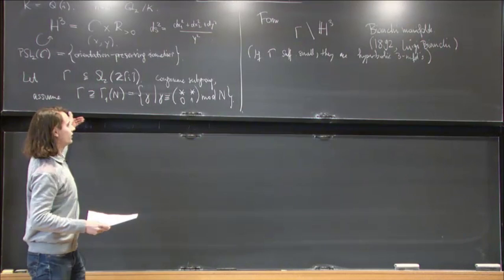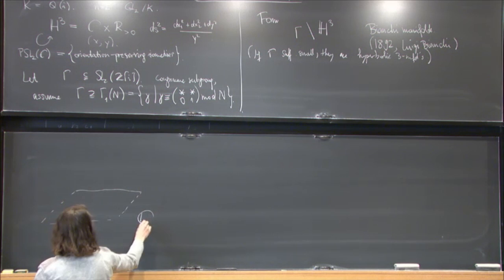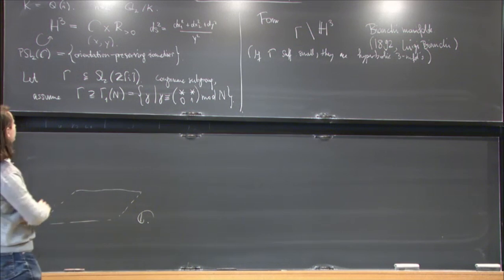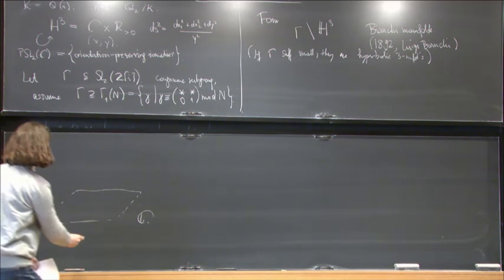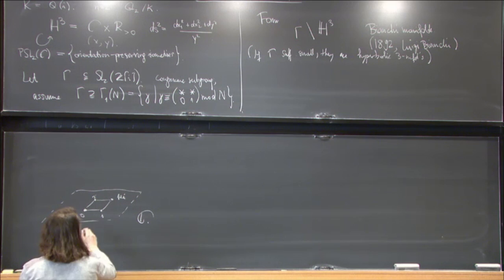And so let me try to draw a picture. And in fact, the picture will look quite similar to the picture for the modular curve. So this time, somewhere on the bottom, you have the complex numbers. And then over it, you have hyperbolic 3 space. And then inside there, inside the complex numbers, you have this lattice given by this ring of integers. And so you will have somewhere 0, somewhere 1, somewhere i, somewhere 1 plus i. So you have this. And so I can now, again, try to draw a fundamental domain.